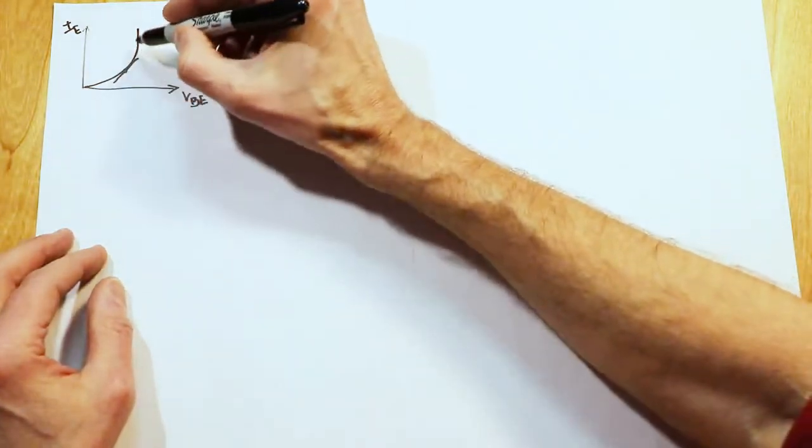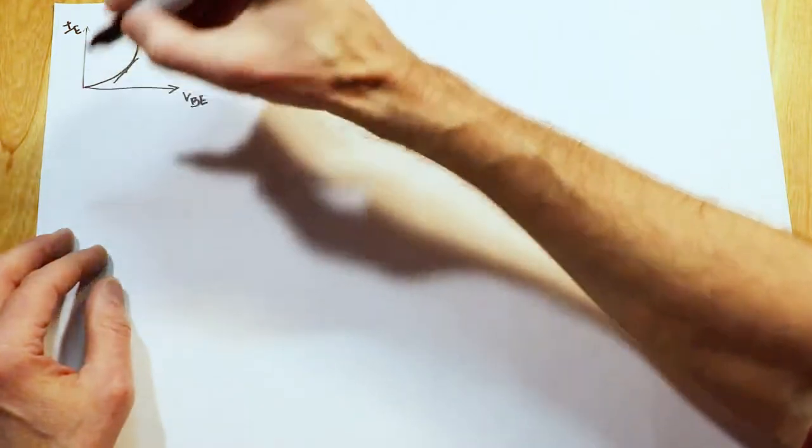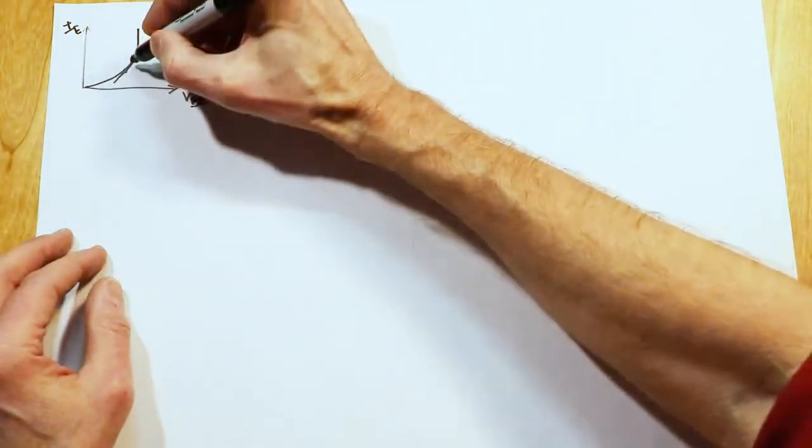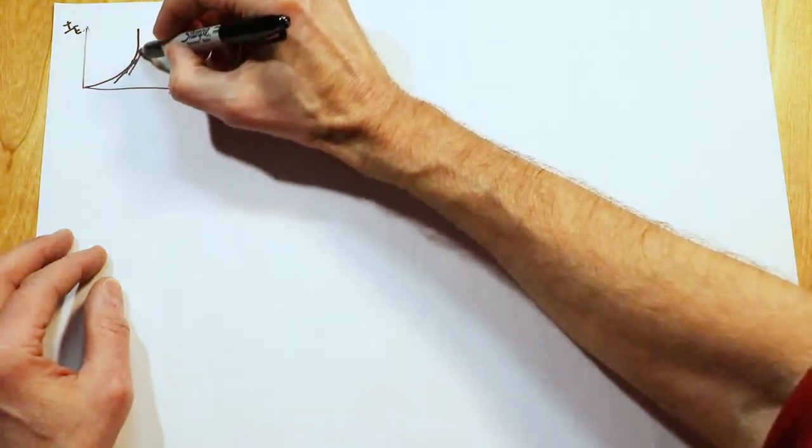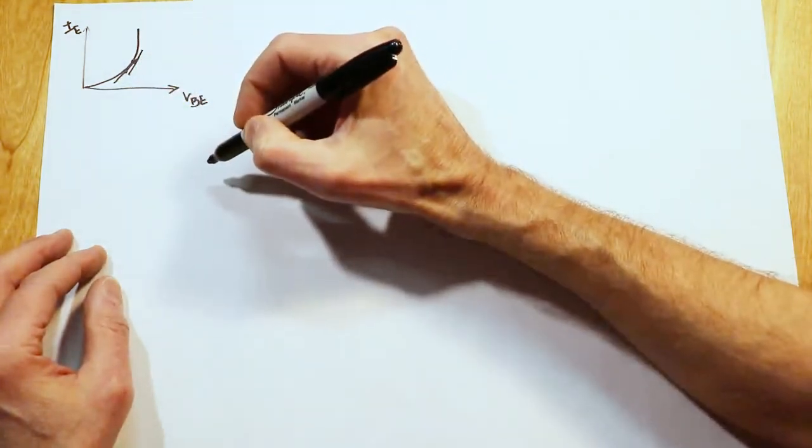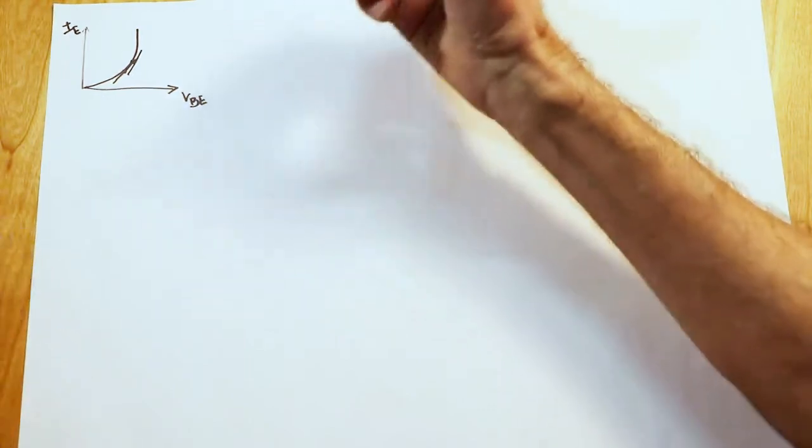Now, as the AC signal is swinging back and forth, this point is changing. So at an increase in input current, that operation point is going to be up there, and this slope is going to be a little bit steeper. What that means is we're going to have a smaller value for R prime E, and the gain is going to go up.